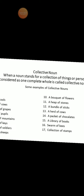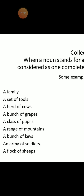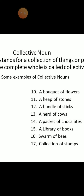Here are some examples of collective nouns: a family, a set of tools, a herd of cows, a bunch of grapes, a class of pupils, a range of mountains, a bunch of keys, an army of soldiers, a flock of sheep, a bouquet of flowers, a heap of stones, a bundle of sticks, a packet of chocolates, a library of books, a swarm of bees, and a collection of stamps.